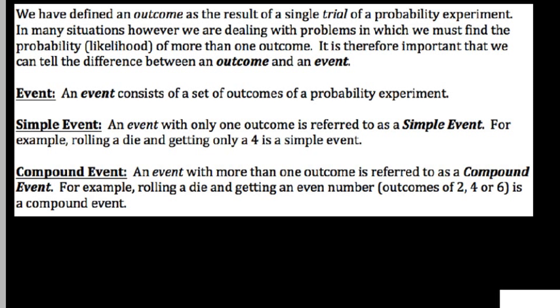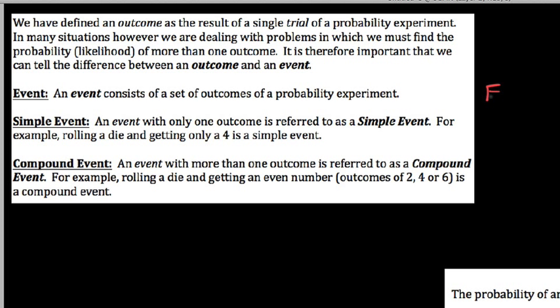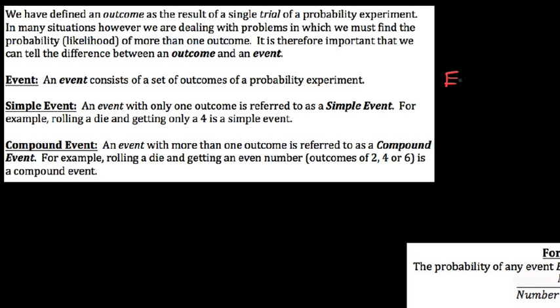We look at the difference between an outcome and an event when we get into probabilities. An outcome is the result of a single trial, but in many situations we talk about probabilities of multiple outcomes — like rolling a die and getting a number greater than 4, which includes 4, 5, and 6. We need to know the difference between an outcome and an event. A simple event has only one outcome, like rolling exactly a 4, whereas a compound event includes more than one outcome, like rolling an even number — which consists of 2, 4, and 6 together.